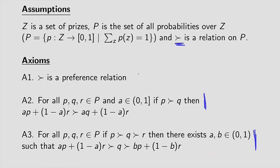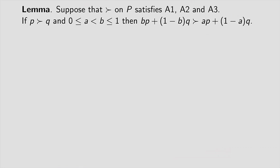The fact we're going to prove today relies really just on Axiom A2. Suppose we have a binary relation on p — our set of lotteries — and it satisfies each of these axioms. Now if the agent strictly prefers lottery p over lottery q, and there are two numbers a and b such that b is strictly greater than a, then the agent has this preference over these compound lotteries.